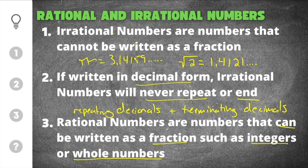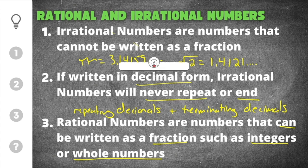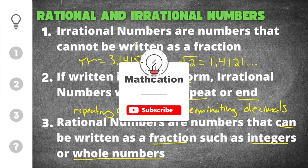So if you see a decimal and it repeats or it ends that means it's rational because you can write both of those as fractions. And if you're learning anything right now don't forget to subscribe so you don't miss out on other helpful math videos.